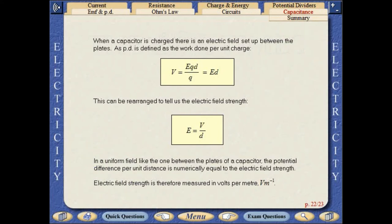When a capacitor is charged, there is an electric field set up between the plates. In a uniform field like the one between the plates of a capacitor, the potential difference per unit distance is numerically equal to the electric field strength.